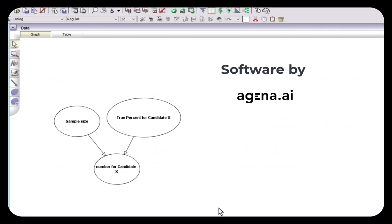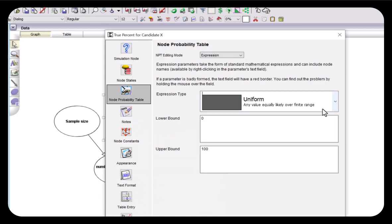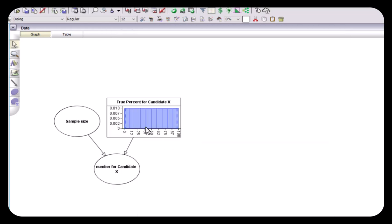First of all let's recap the standard Bayesian model for learning the true percentage of support for candidate X from the polling data. We start by assuming that this true percentage could be anything between 0 and 100, and that any value is equally likely. That's what we call a uniform distribution over the range 0 to 100. When we plot that as a probability distribution you can see that it's got this equal probability from 0 to 100.